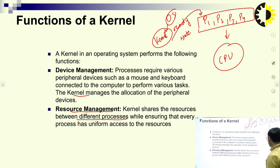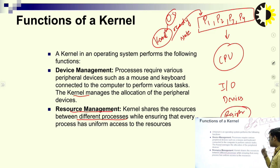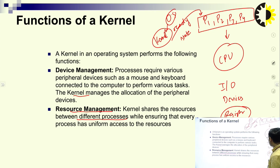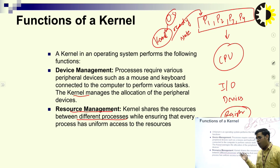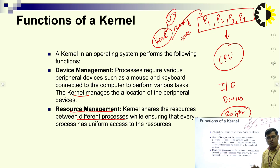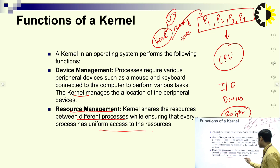Kernel also acts as a resource manager. Kernel shares resources between different processes. These resources include CPU, input/output devices, and other resources like registers inside the CPU. Processes want resources for their execution, and it is the responsibility of the kernel to manage and allocate these resources. The kernel ensures that every process has uniform access to the resources.